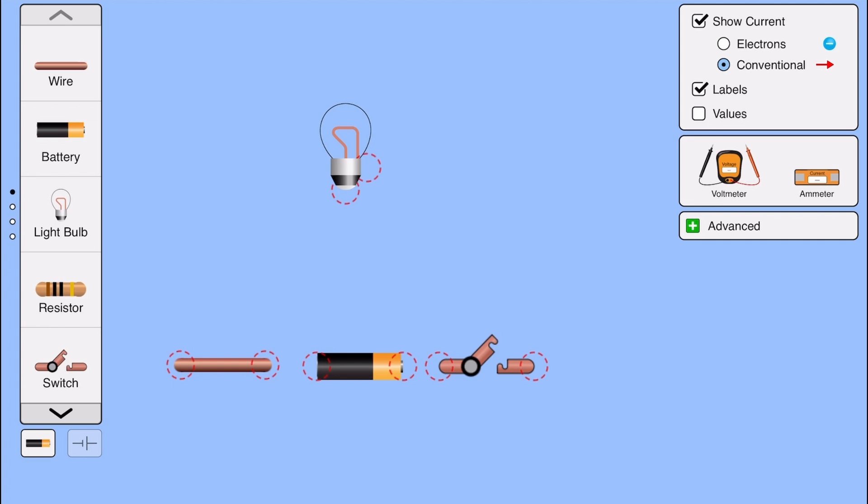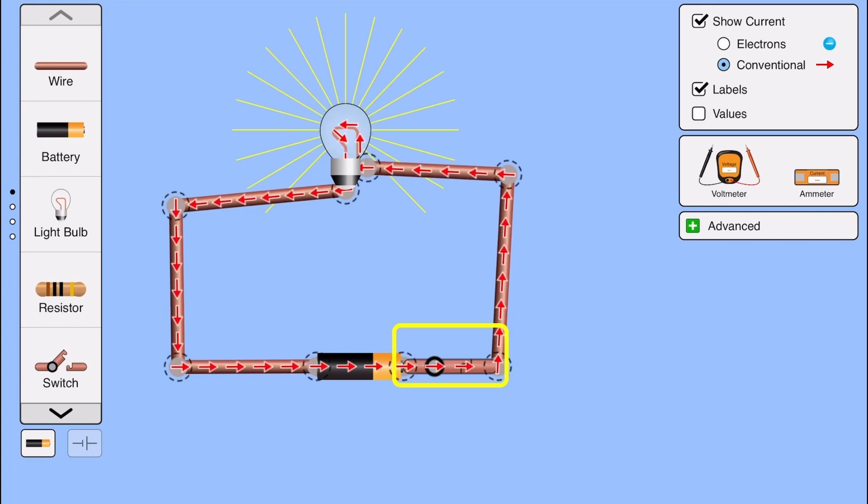So let's start simple. We connect all of them up. Battery, wires, bulb, and switch. And the bulb is glowing. Nice. It works. Now, let's make it a bit more interesting.